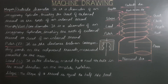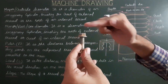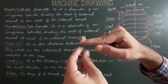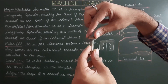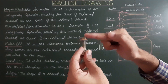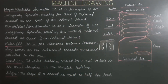Lead is the distance moved by a nut or bolt in the axial direction in one complete rotation. For a nut-and-bolt combination, it is the vertical distance or distance moved by the nut parallel to the axis in one complete rotation. Slope of a thread equals half the lead.